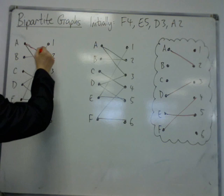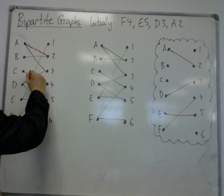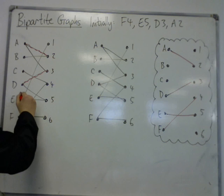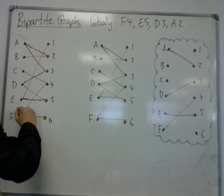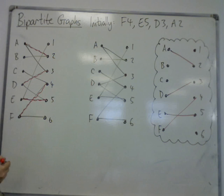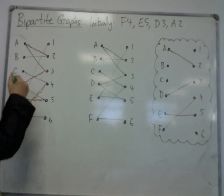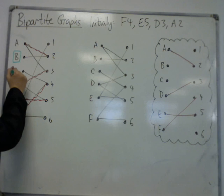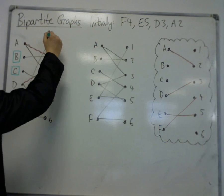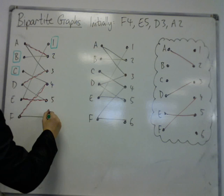So a-2, d-3, e-5, and f-4. The unmatched vertices are b, c, 1, and 6.